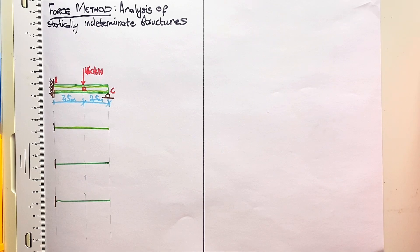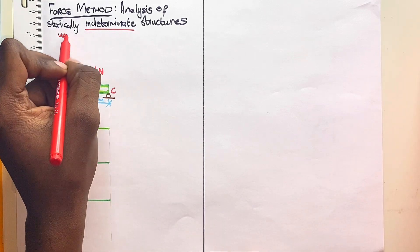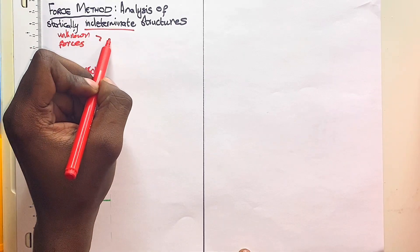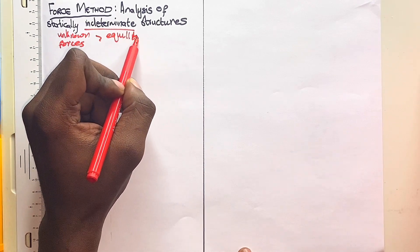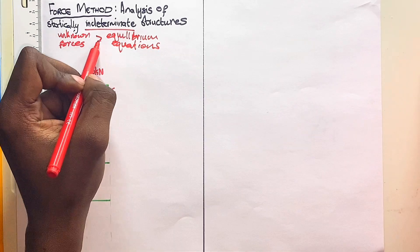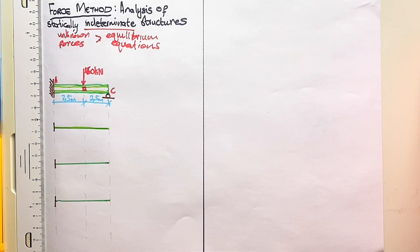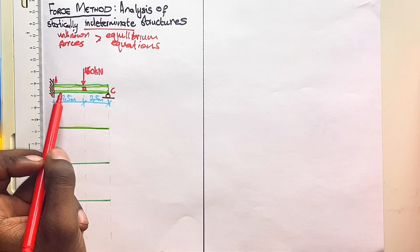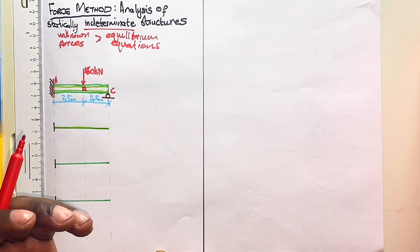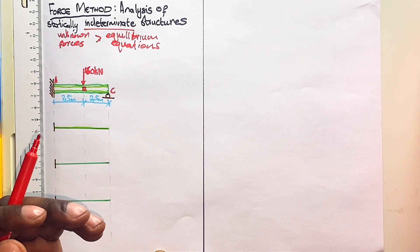Welcome back. We have discussed what are determinate structures and what are indeterminate structures. A structure is indeterminate when the number of unknown forces on your structure is greater than the equilibrium equations we can use to calculate those unknown forces. So if you have four unknowns you need four equations, but a member with one part will only have three equations.